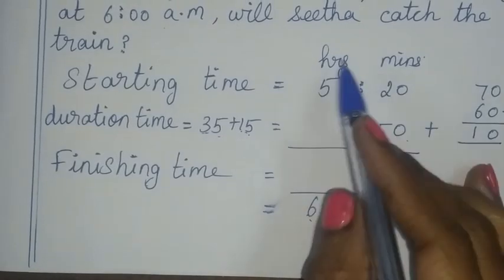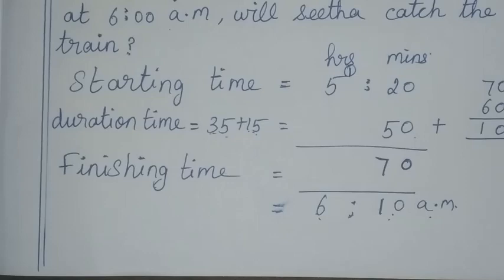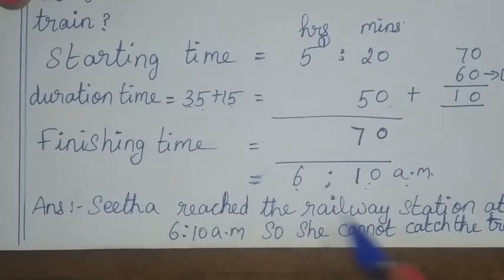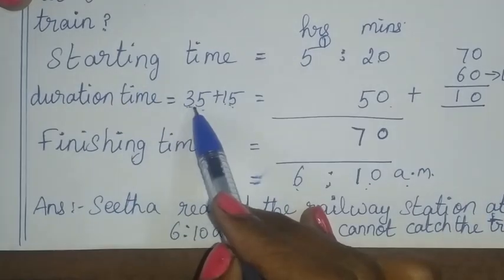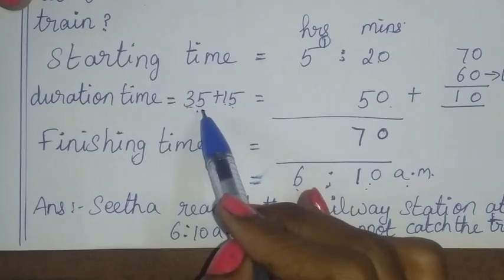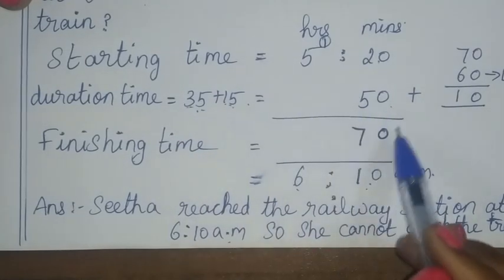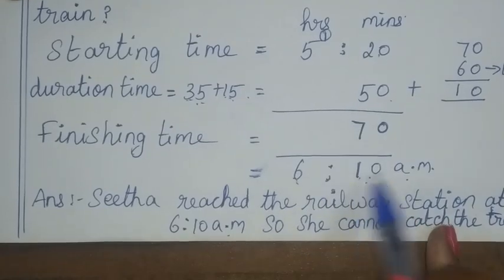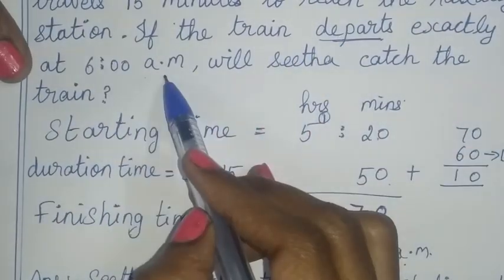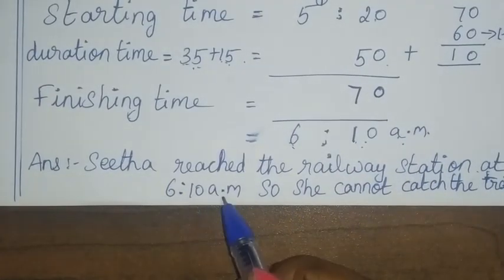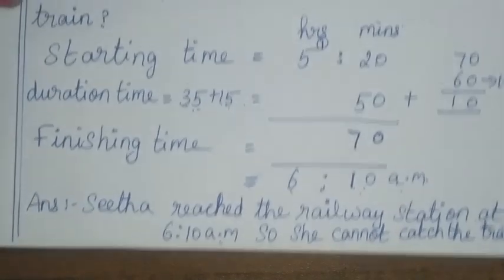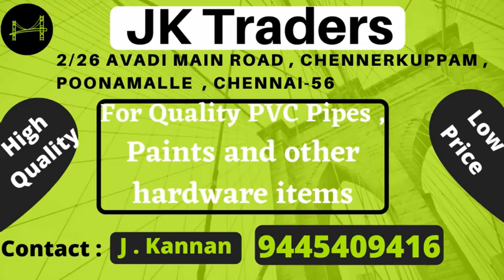So Sita cannot catch the train. She reached the railway station at 6:10am but the train had already departed at 6am. That's all. Thanks for watching, children. Contact 944-540-9416.